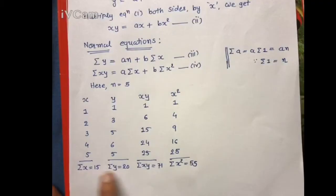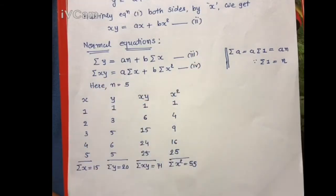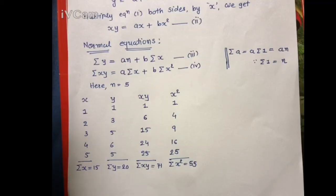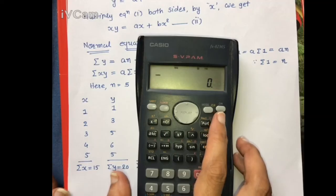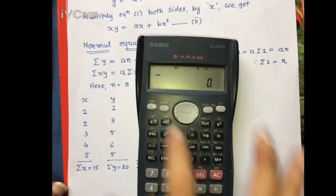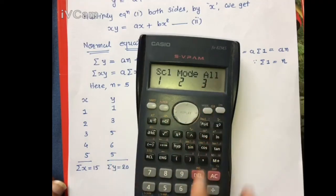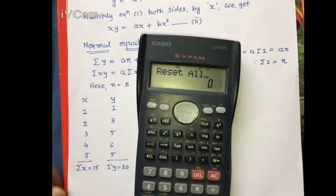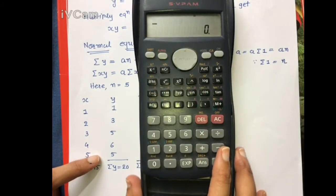Now, if you do not want to do this without a calculator and wish to use one, I will show you how. First you need to reset your calculator. To reset, use Shift and Mode, then press 3 for All. Press = and your calculator is reset. Now you can do your calculations.